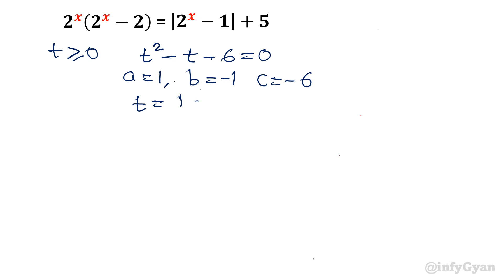So t will be equal to, I am writing directly, minus b plus minus under the root 1 plus 24 over 2. 1 plus 24 is equal to 25 is equal to 5. So 1 plus minus 5 over 2. So that will give us, if I am taking plus sign, then 1 plus 5 is equal to 6 over 2. So 3.